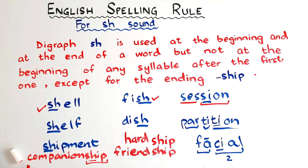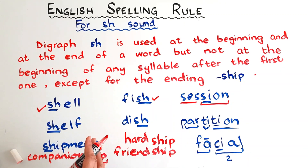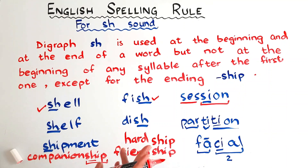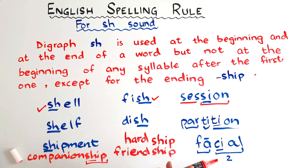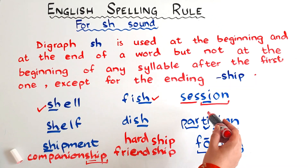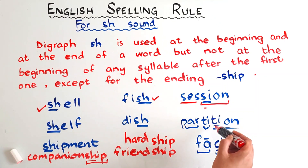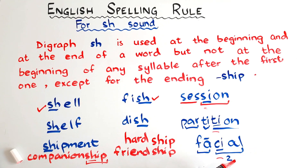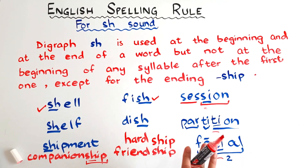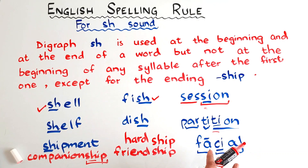Except for that, if you hear the SH sound in the middle of a word at the beginning of any other syllable, you need to write it with SI, TI, or CI. If you want to learn about these phonograms, I have some very detailed videos on this — giving the link in the description box. Do watch those videos as well. I know you'll love it if you're interested in learning English spelling rules.